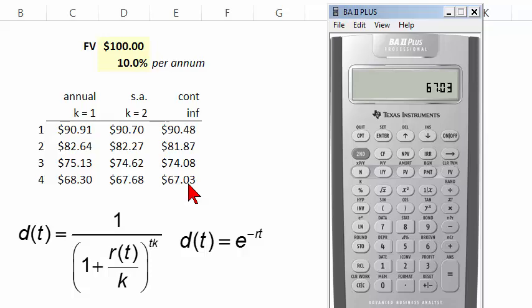And I can just test that by compounding that forward over four years at the same interest rate. I should get a future value back of 100. Very easy to do.